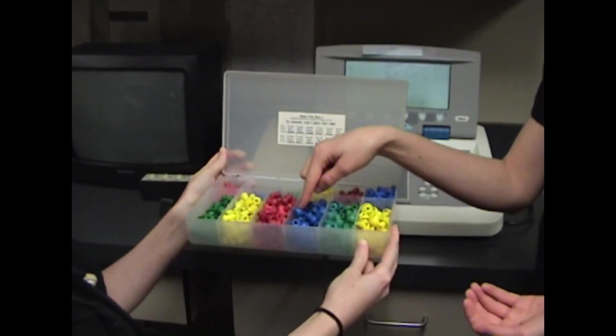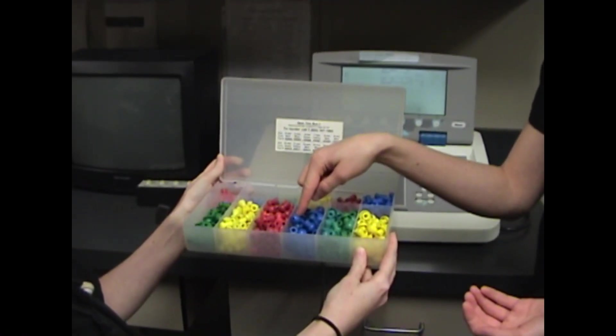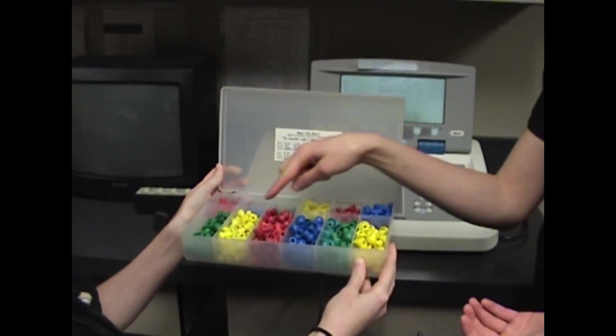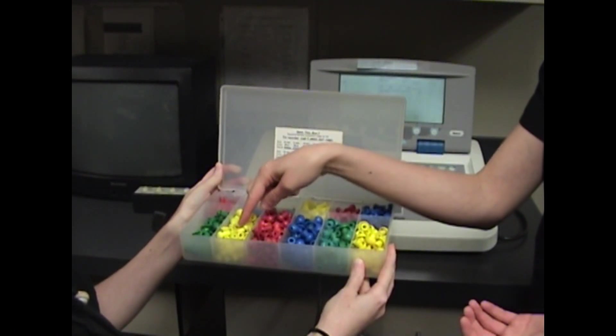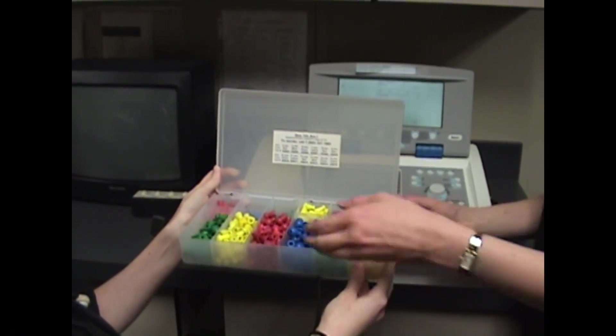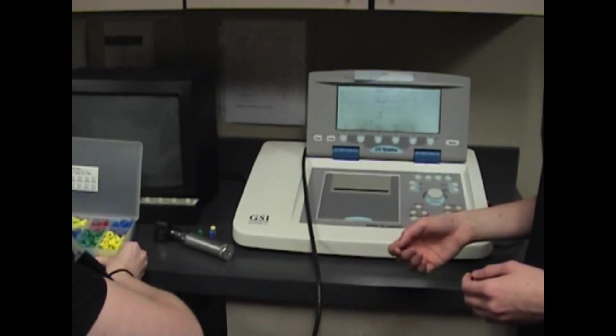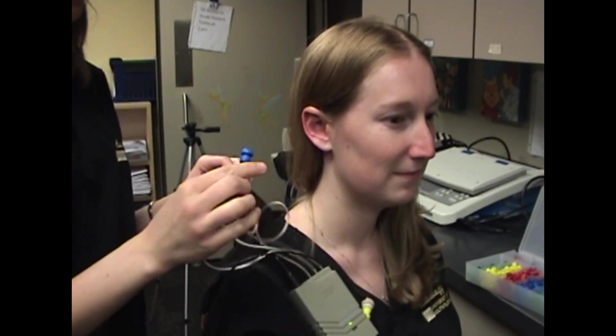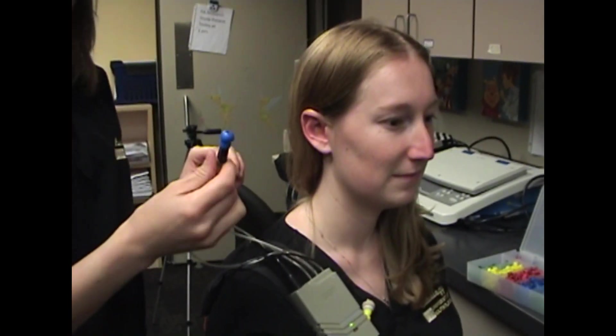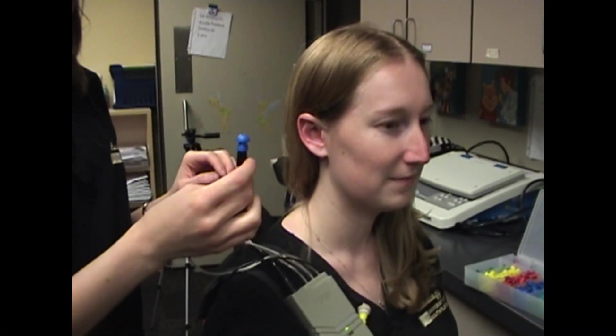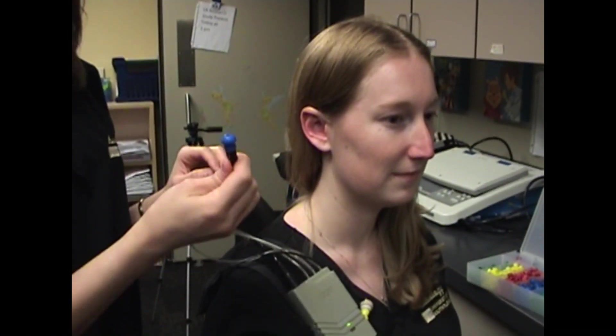Based on what you observed in otoscopy, you'll select the appropriate size of tip for the ipsilateral ear. If we select the blue tip for her right ear, then for the contralateral tip we want to go two sizes smaller, so we would pick the yellow one.